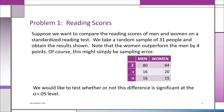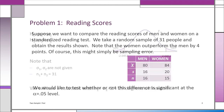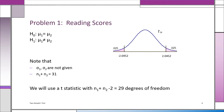Problem one: we're comparing the reading scores of two groups, men and women. The women's average score is 84 compared to 80 for the men — a four-point difference. The question is whether that difference is significant or just sampling error. The sample sizes are 16 and 15, giving 29 degrees of freedom (n1 + n2 − 2). You cannot use z since you don't know sigma, so you'll use a two-sample t-test. H0 is that mu1 equals mu2; H1 is that mu1 is not equal to mu2.